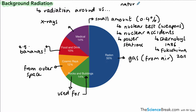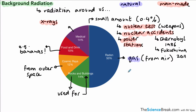We can split these up into natural sources and man-made sources. The ones highlighted in pink are all man-made sources of background radiation, whereas all the rest are natural sources. So the gas from the air, rocks and buildings, cosmic rays from outer space, and food and drink — all of these are natural sources of background radiation.